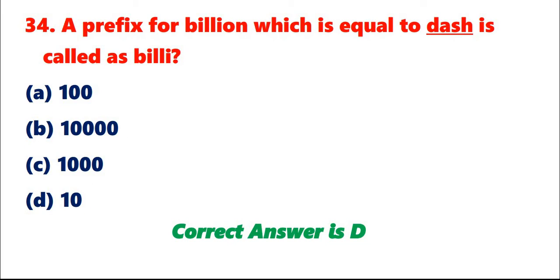Question 34: A prefix for billion which is equal to is called as billy. A. 100. B. 10,000. C. 1000. D. 10. Correct answer is D.